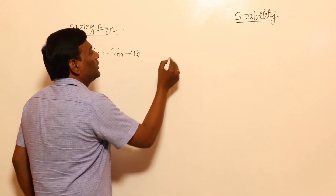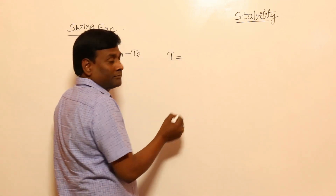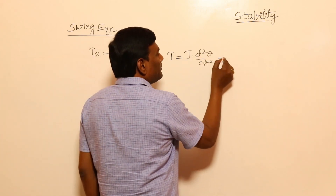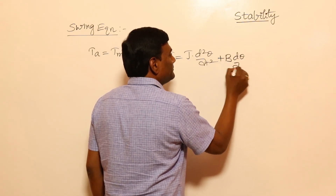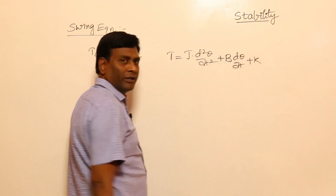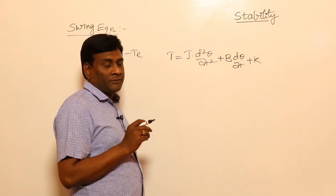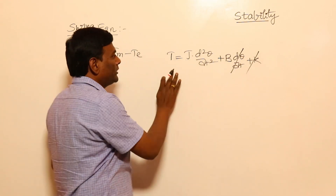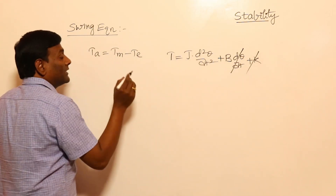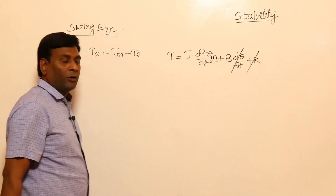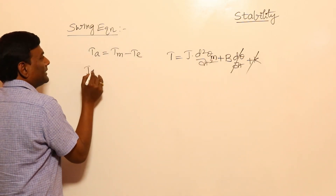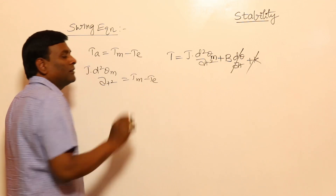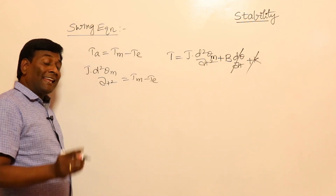The generalized torque equation is: J·(d²θ/dt²) + B·(dθ/dt) + K. For our purposes, acceleration matters most, so T = J·(d²θ_m/dt²), where θ is the mechanical angle. This gives us: J·(d²θ_m/dt²) = mechanical torque minus electrical torque.